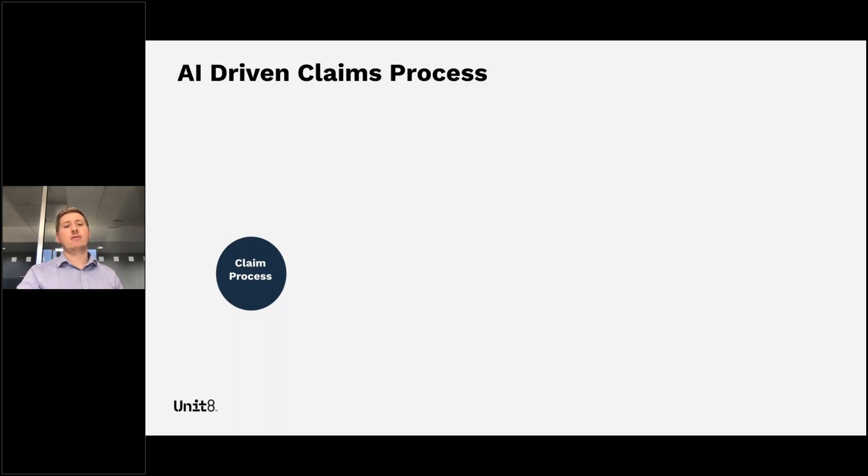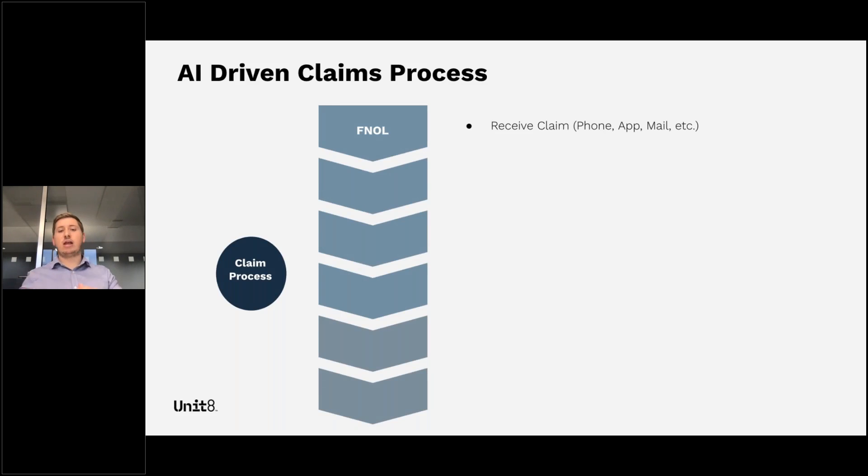If we look at the claims process, you generally have a first notification of loss. You receive a claim via phone, application, or mail. The first step is data extraction - what data is relevant in that claims information? Name, policy number, getting all of that data out. If it's a car accident, have the ability for the insurer to submit the claim via mobile app, take pictures of the damage, and then have a machine analyze based on the damage we see. We have 10,000 other images of car accidents and the payouts we've had over the past 10 years. What is the proper price we should be paying out? That whole process gets automated into a matter of seconds.